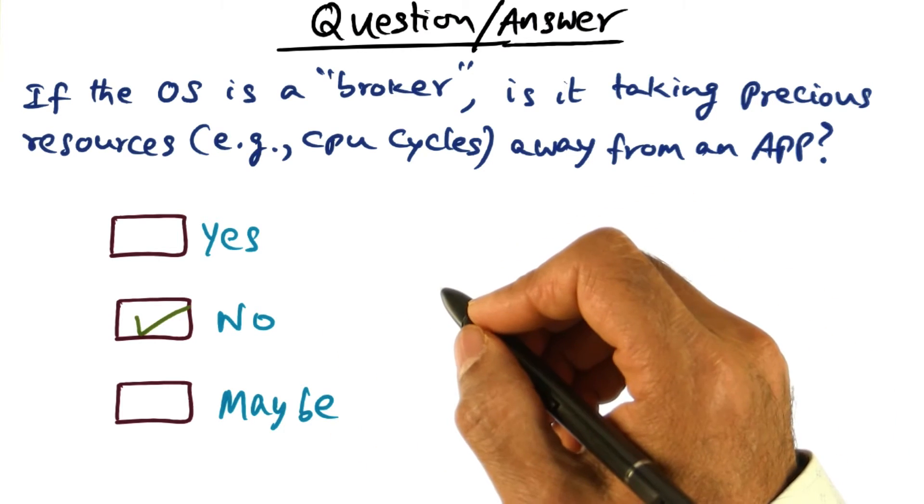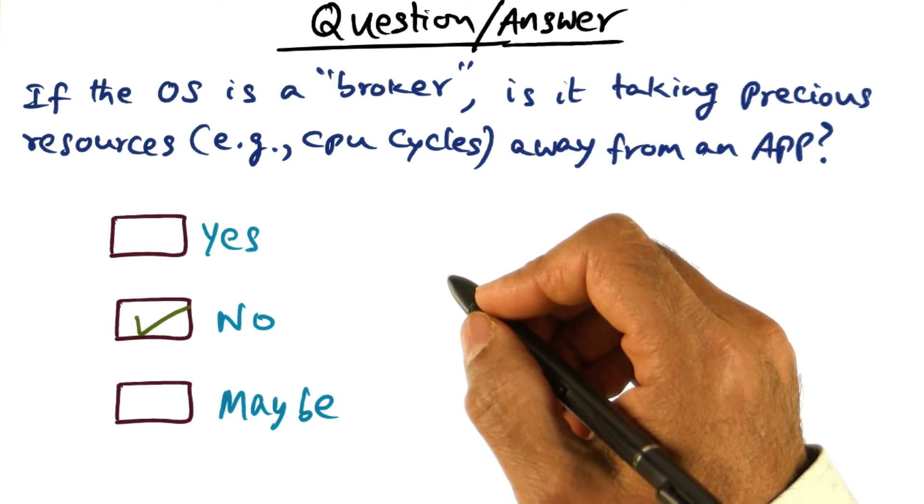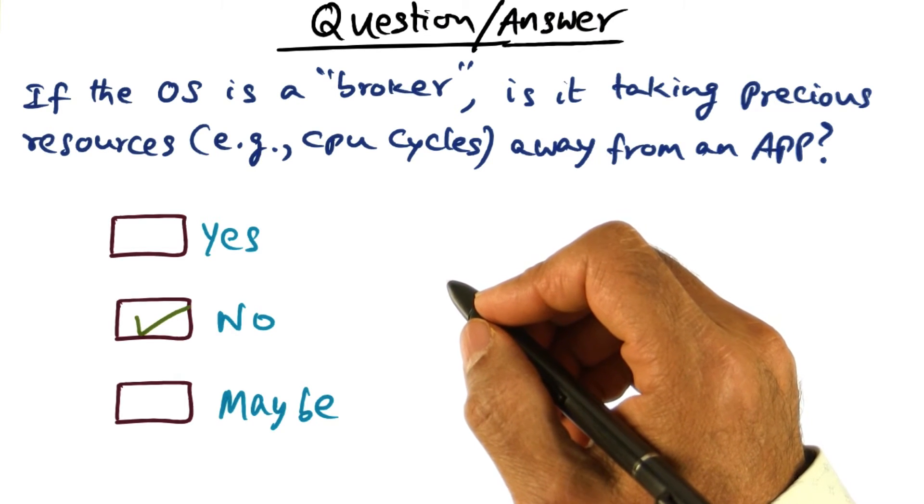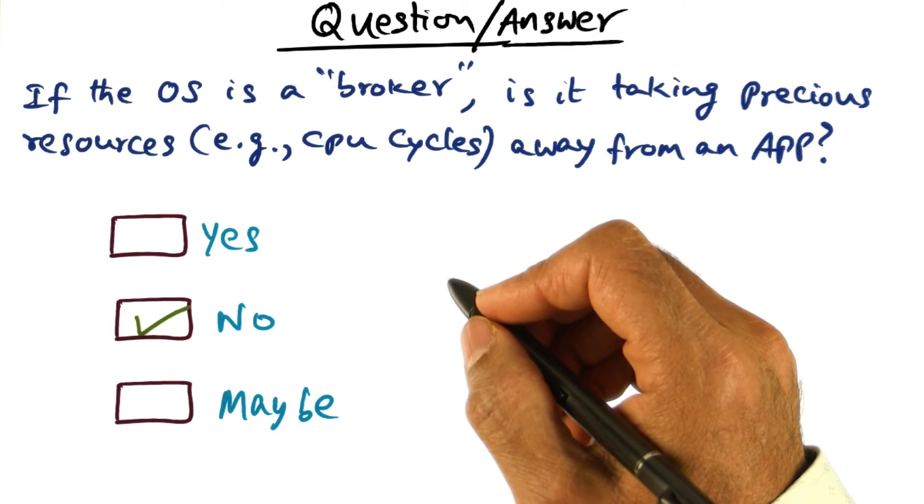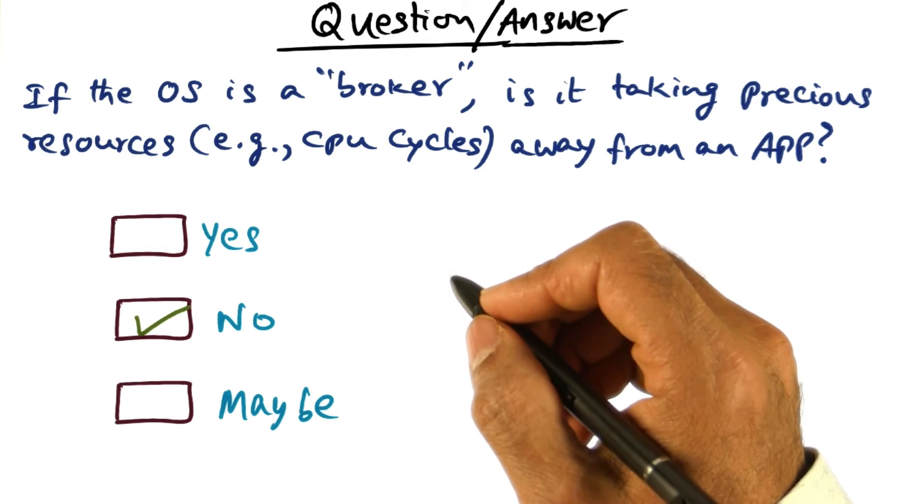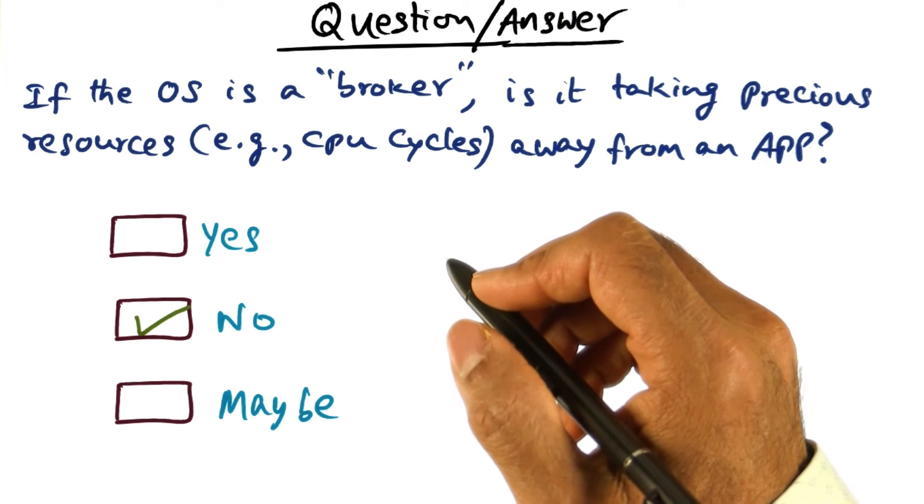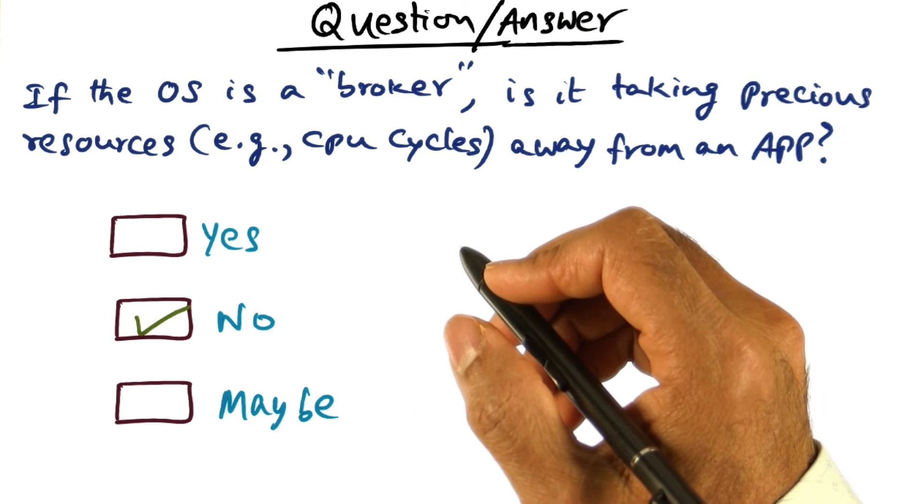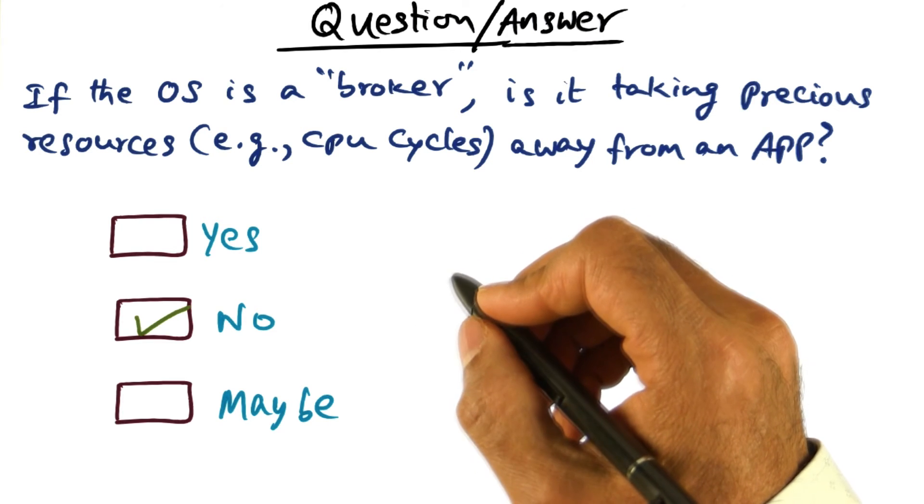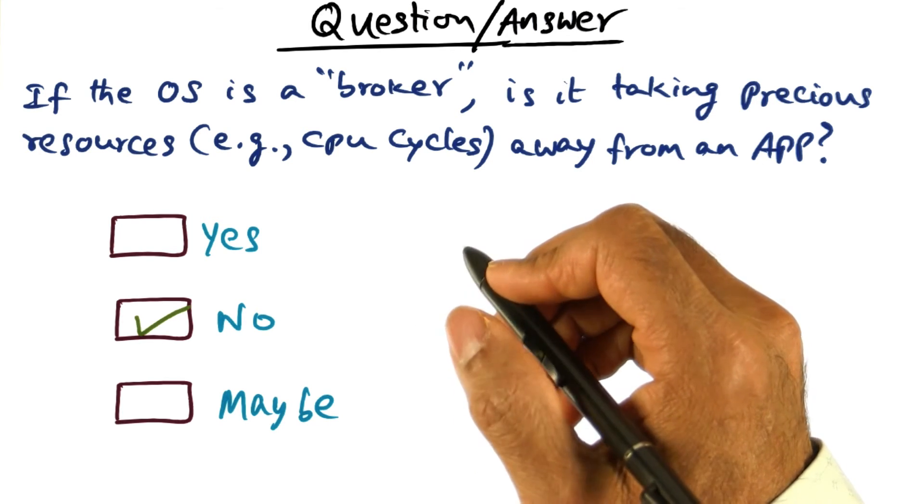It's sort of like when you give to a charity, the first question you ask is what percentage of the collection is used by the charity as administrative overhead. You don't want to give to a charity that spends more than a few percentage points of the collections on administrative overhead. Same deal with an operating system.